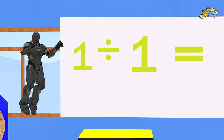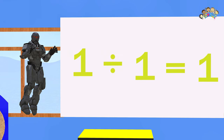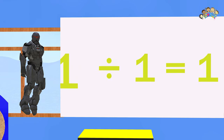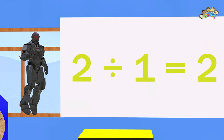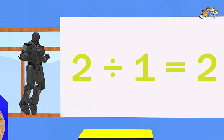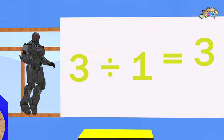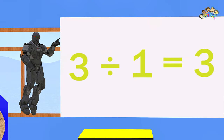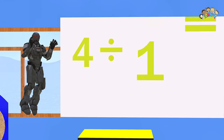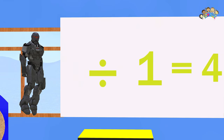Finally, let's do some division. One divided by one equals one. Two divided by one equals two. Three divided by one equals three. Four divided by one equals four. Five divided by one equals five.